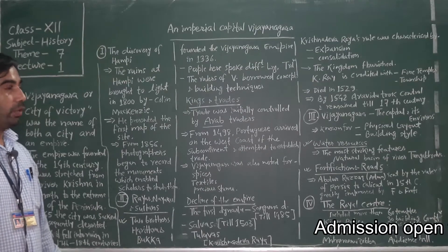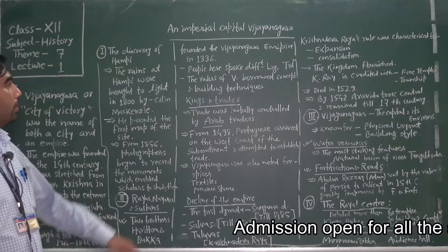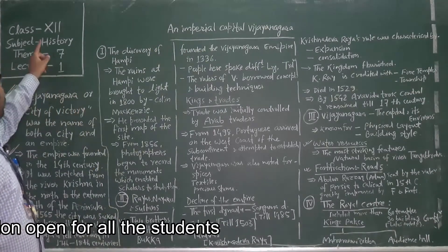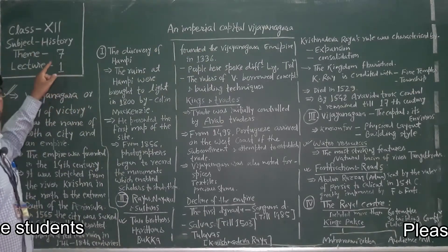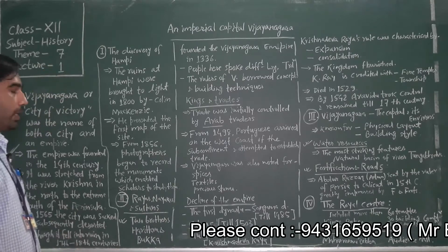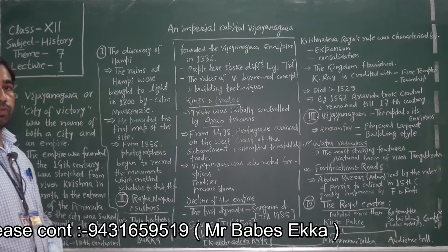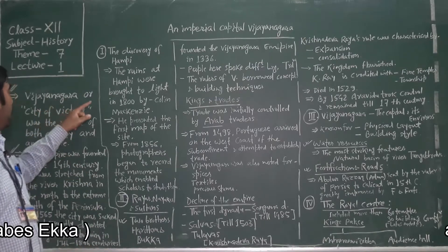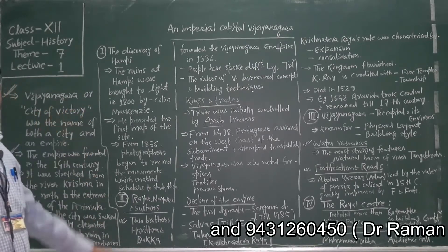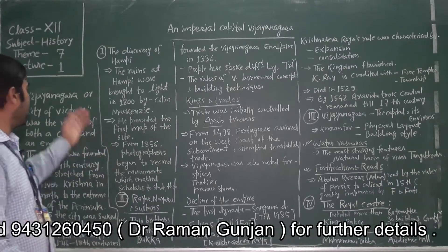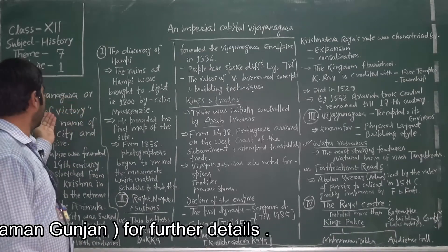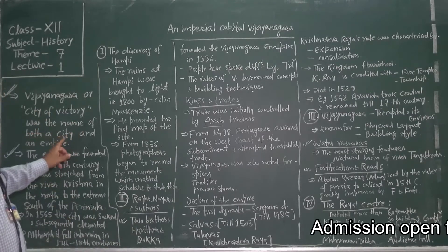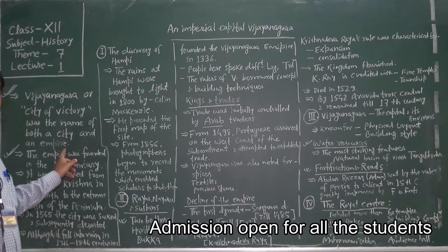Hello everyone. We are going to start an Imperial Capital Vijayanagara — Standard 12th History, Theme 7, Lecture 1. Let's introduce the topic Vijayanagara. Coming to the term Vijayanagara, it was a city of victory. As the name reflects, 'city of victory' was the name of both a city and an empire.